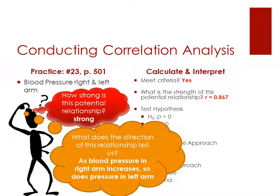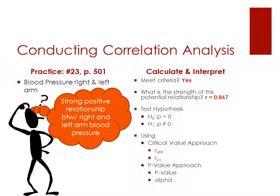Well, as blood pressure in the right arm increases, so does the pressure in the left arm, because this is a positive relationship. So that means as one value is going up, so does the other. So we have a strong positive relationship between right and left arm blood pressure.